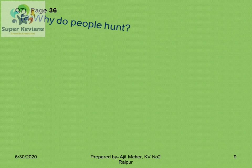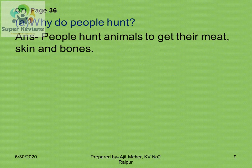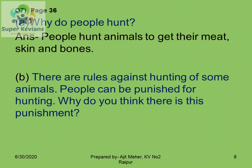The next question on page 36: why do people hunt? Hunting means killing of animals. People hunt animals to get their meat, skin, and bones, and sometimes they hunt for joy as well. There are rules against hunting and people can be punished for it. Why do you think there is this punishment?